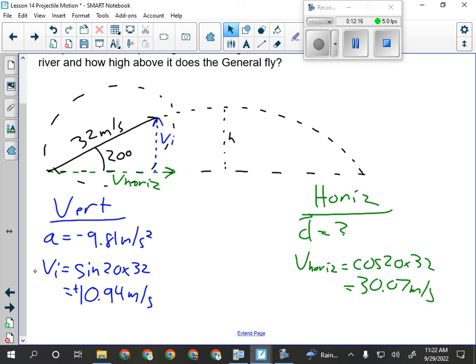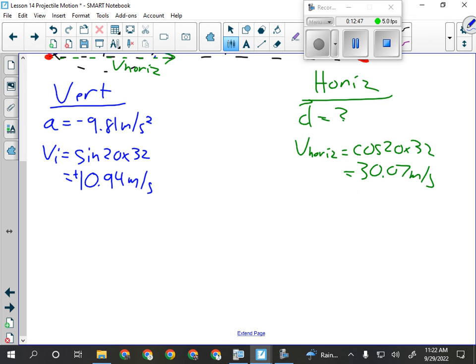I've got to recognize that the launch point, which is right here, and the impact point are level. Yesterday, we said that if I throw something up in the air and it comes back down, when it comes back down, it's going the same speed it left at in the opposite direction. That's still true. If I only looked at the general e jumping over from a vertical perspective, I would see it go up and come back down. That's it. From a vertical perspective, that's all it does. So, I can safely assume, in this situation, that Vf will be negative 10.94 meters per second. Now, do I have enough information to get time? I do.